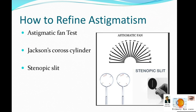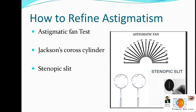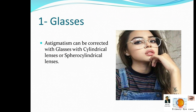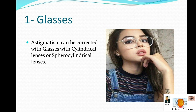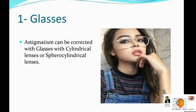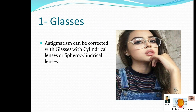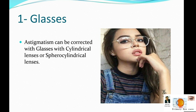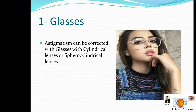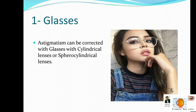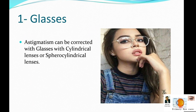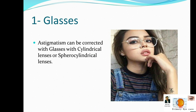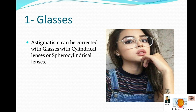How can we correct astigmatism, and what treatments are available? First of all, glasses. Glasses may be recommended for kids, for elderly people, and for people who play sports. Depending on the patient's profile and their needs, we recommend glasses, contact lenses, or surgical therapy.